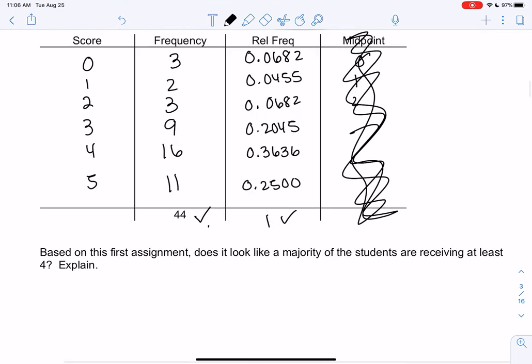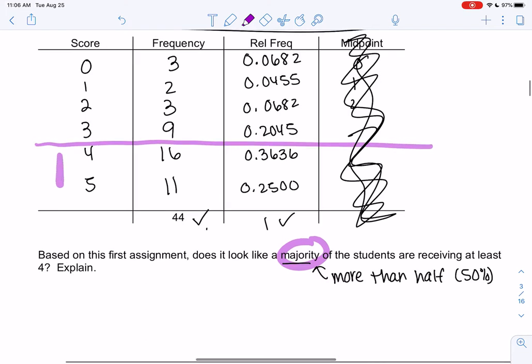So now that we have nice, more organized data, rather than the raw data, this was really hard to see patterns. We can answer this question a little bit faster. So does it look like the majority of students are receiving at least a 4? What does majority mean? So majority, I would say, is more than half. Or more than 50%. So let's find the percent and check it out. If I look at this really quickly, at least 4 would be 4 or more.